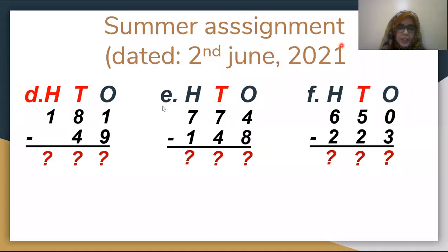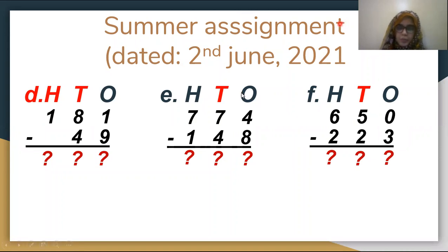Now parts D, E, and F. Part D is 181 minus 49. Part E is 774 minus 148. Part F is 650 minus 223. For these you have to borrow from the previous digits. Mention your answers in your assignment.